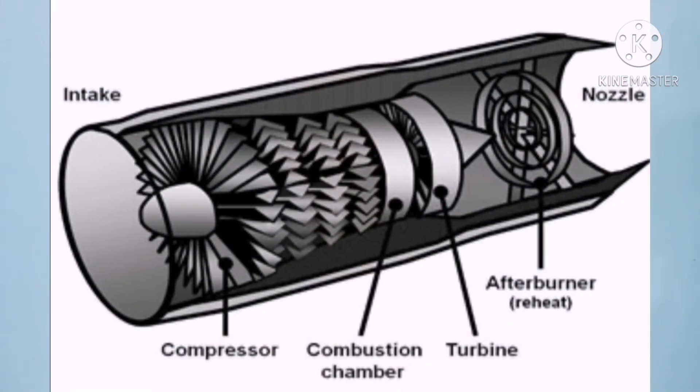For the sake of fuel efficiency, most aircraft now use turbofan. But still, turbojet is being used in many long-range missiles. As you can see in the picture, this is the basic layout of the turbojet engine.